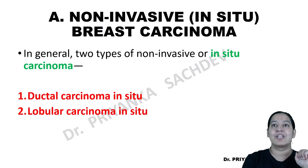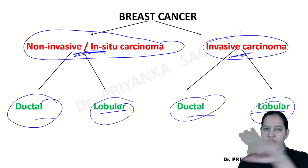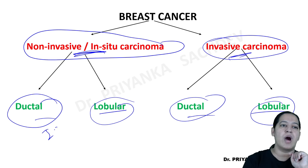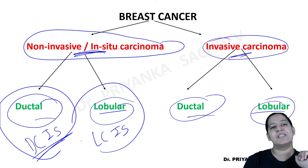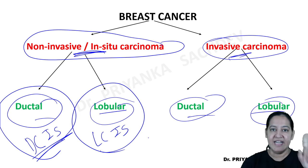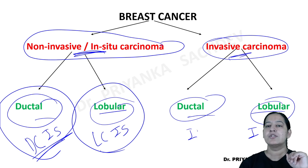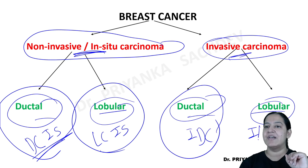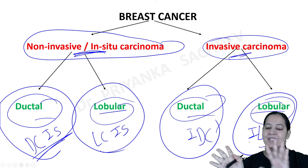Let's start with non-invasive in-situ breast carcinoma. Two types: ductal and lobular. The short forms are: Ductal Carcinoma In-Situ — DCIS. Lobular Carcinoma In-Situ — LCIS. And for invasive: Invasive Ductal Carcinoma — IDC, and Invasive Lobular Carcinoma — ILC. So the four tumors are DCIS, LCIS, IDC, and ILC. I will teach you one by one.